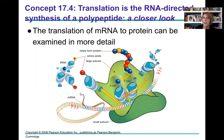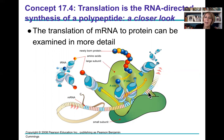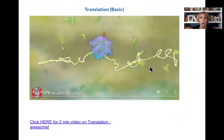Translation occurs in the cytoplasm of eukaryotes, and in the cytoplasm of prokaryotes as well. It incorporates the messenger RNA, a ribosome with a large subunit and a small subunit that come together, and transfer RNAs — little delivery trucks that bring a specific amino acid to the correct part of the ribosome. There's a P site, an A site, and a site where the transfer RNA exits to go get another amino acid.